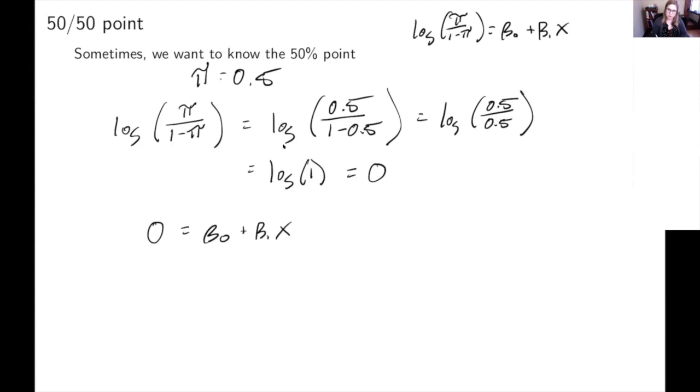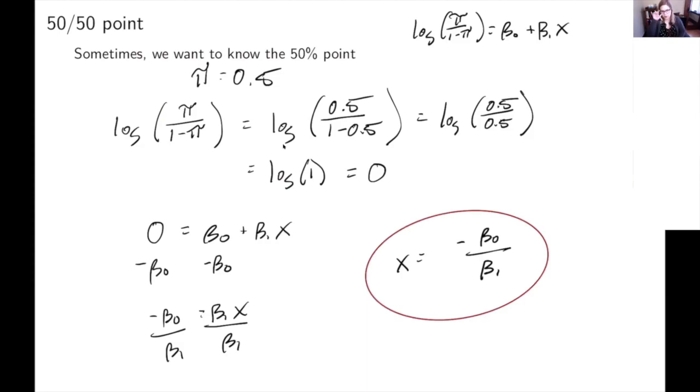And I want to solve for X to figure out that X point. So I'm going to subtract beta 0 from both sides, and then I'm going to divide by beta 1. And so X is equal to negative beta 0 over beta 1.